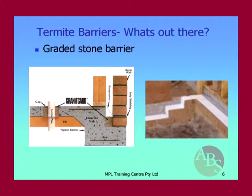Different again are graded stone barriers — mainly Granite Guard. Some of the main problems are that allowable cavities can be 40mm, but if bricklayers haven't cleaned the inside of the cavity and there's mortar overhang, you might end up with only a 20mm cavity. Termites have actually gotten in that way. The building problem with Granite Guard is that cavities need to be cleaned out properly before the stone goes in, and many people forget to do that.